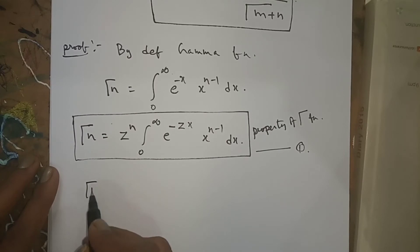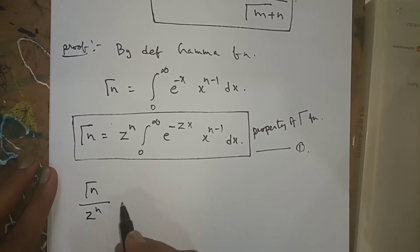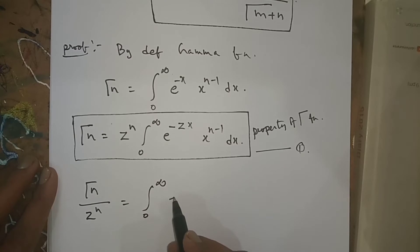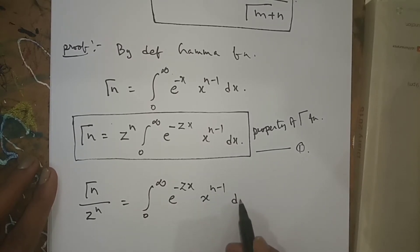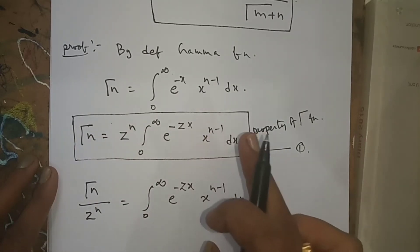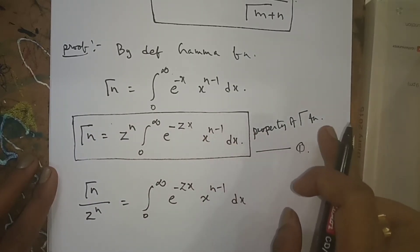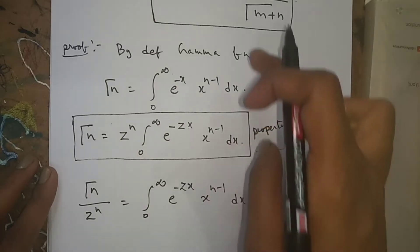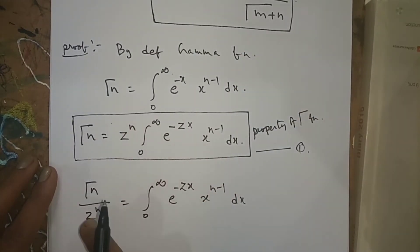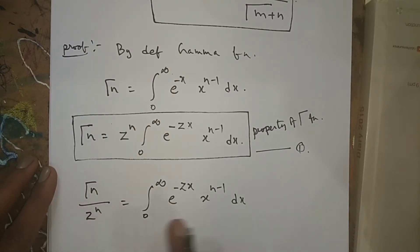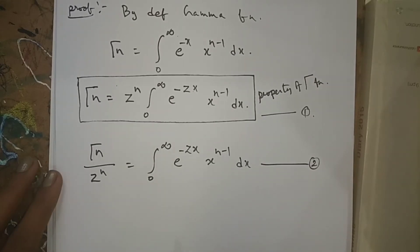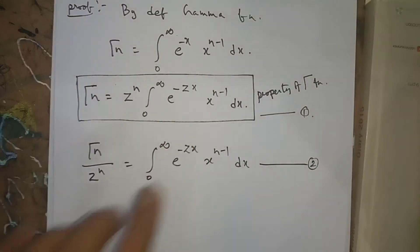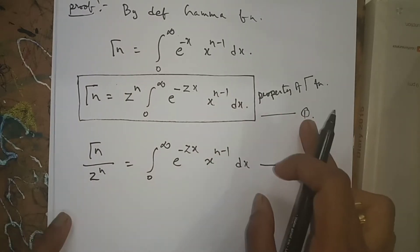If we send z^n to the other side from Equation 1, we get: Γ(n) / z^n = ∫₀^∞ e^(−zx) · x^(n−1) dx. This is another form of the property of the Gamma function. I am taking this as Equation 2.